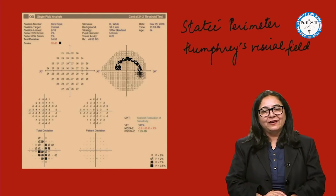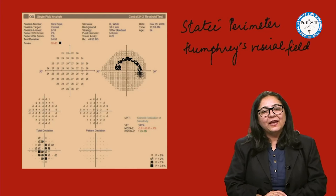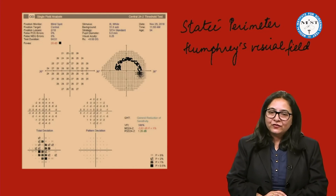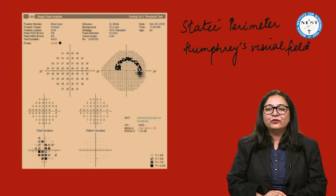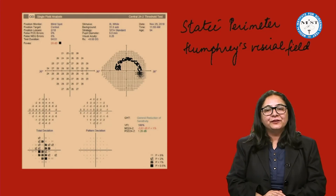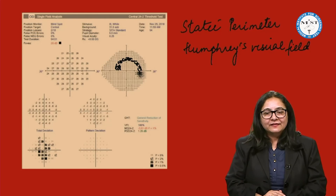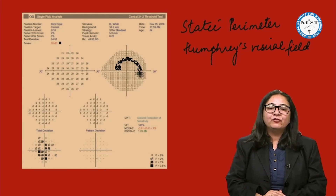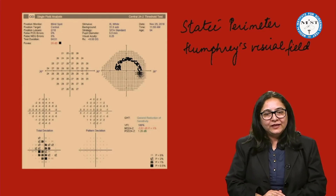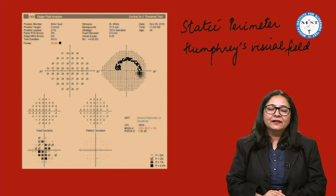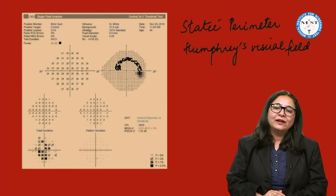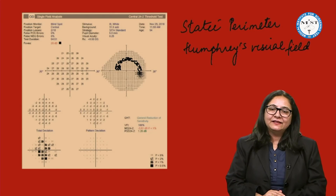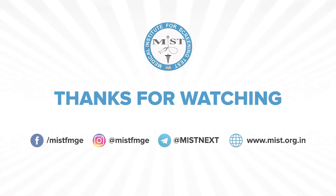With this we have come to the end of this section, in which we studied about the physiology of vision. We discussed the different forms of vision and how they are tested, and we also learned about visual field testing — that is, perimetry.